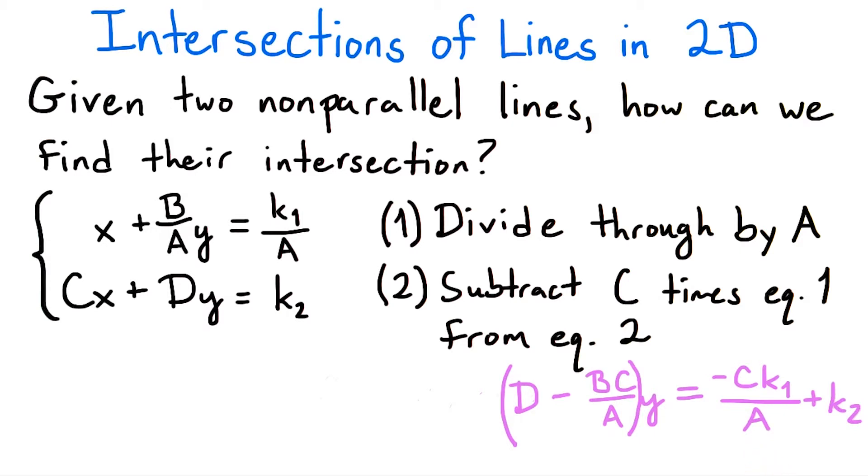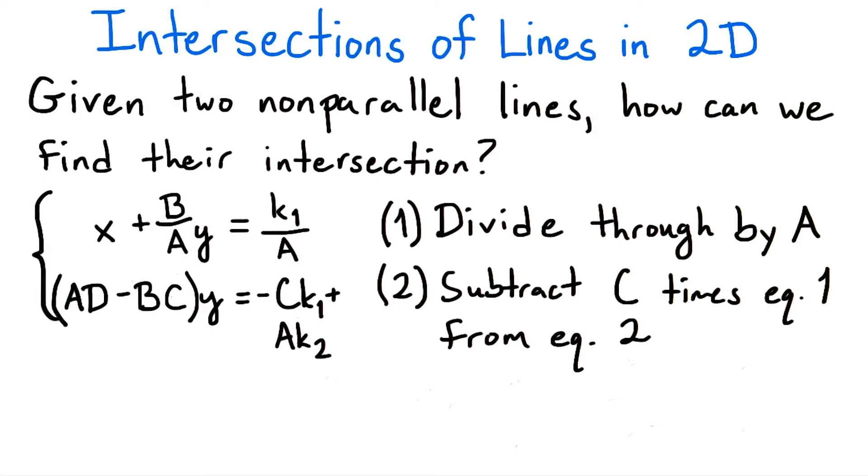Now, let's multiply through by a to make the equation a bit nicer to work with. And then, to solve for y, we can divide through by ad minus bc.